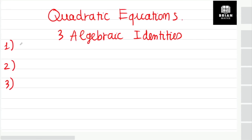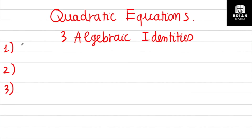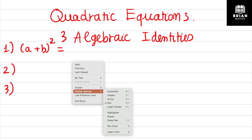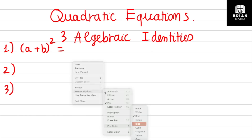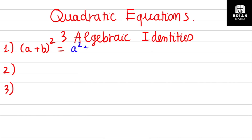The first one: you need to know about the square of sum. The square of sum — you have (a + b) squared. This formula has to be equal to a squared plus 2ab plus b squared.